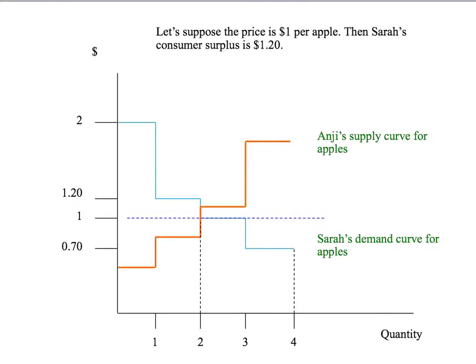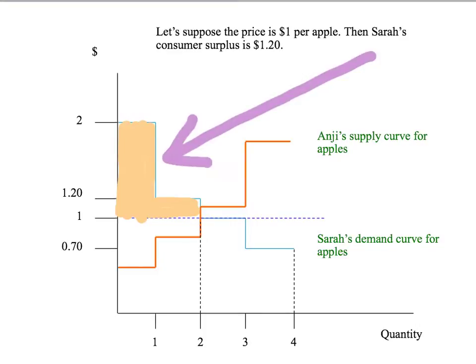Let's pick a market price of $1.00 per apple. What is Sarah's consumer surplus? At $1.00 per apple, Sarah buys two apples. Her consumer surplus is the area under her demand curve, above the price she pays, up to the quantity purchased — the yellow shaded area — which equals $1.20. On the first apple, she'd pay up to $2.00 but only pays $1.00, giving a surplus of $1.00. On the second apple, she'd pay $1.20 but only pays $1.00, giving $0.20. So $1.00 + $0.20 = $1.20 consumer surplus.